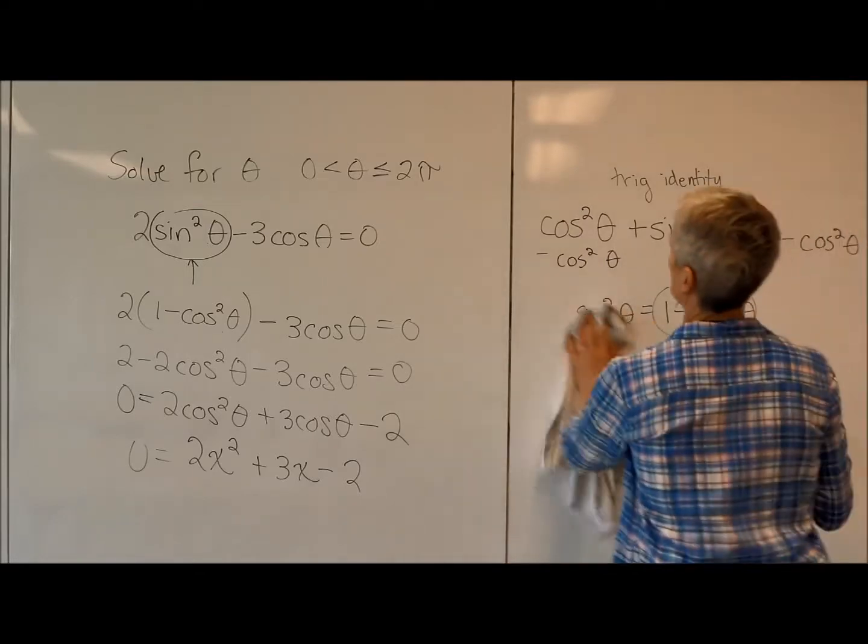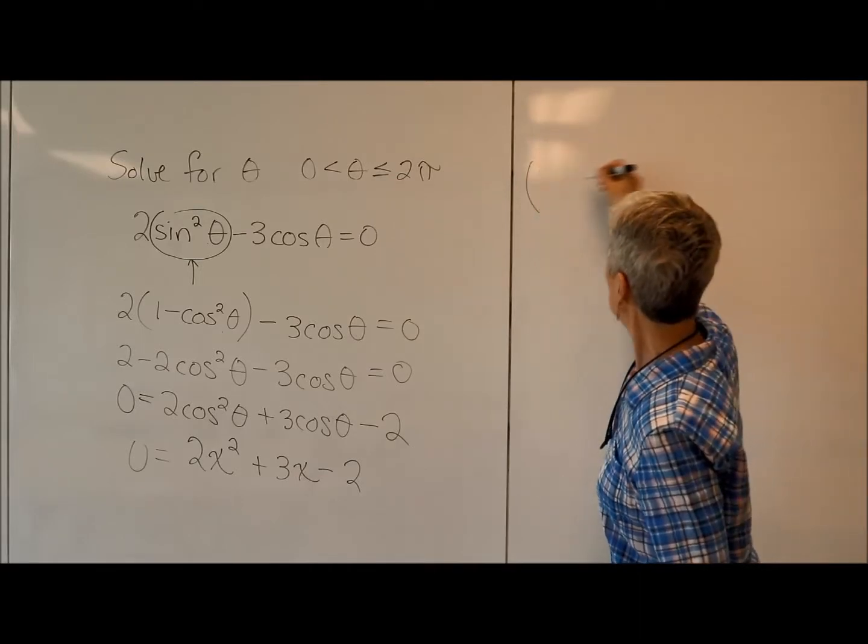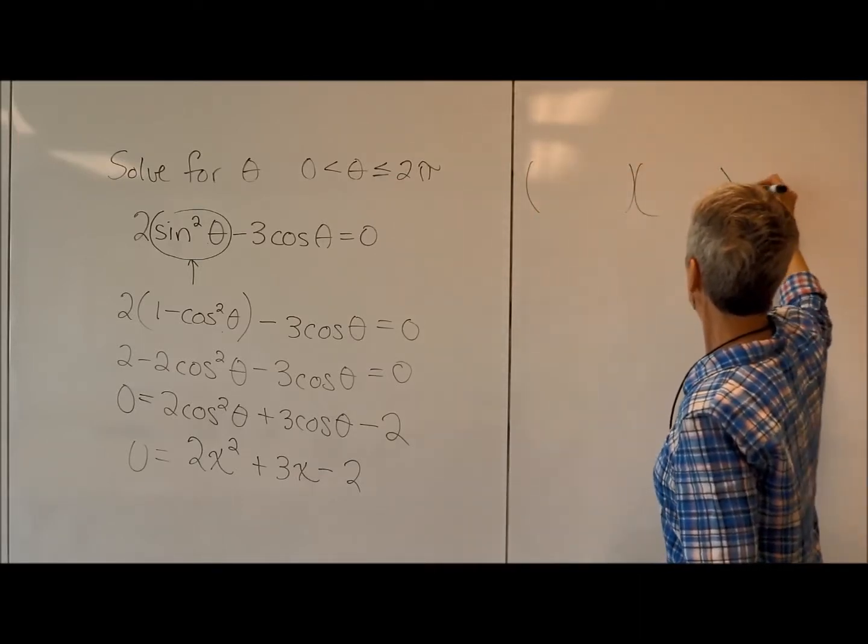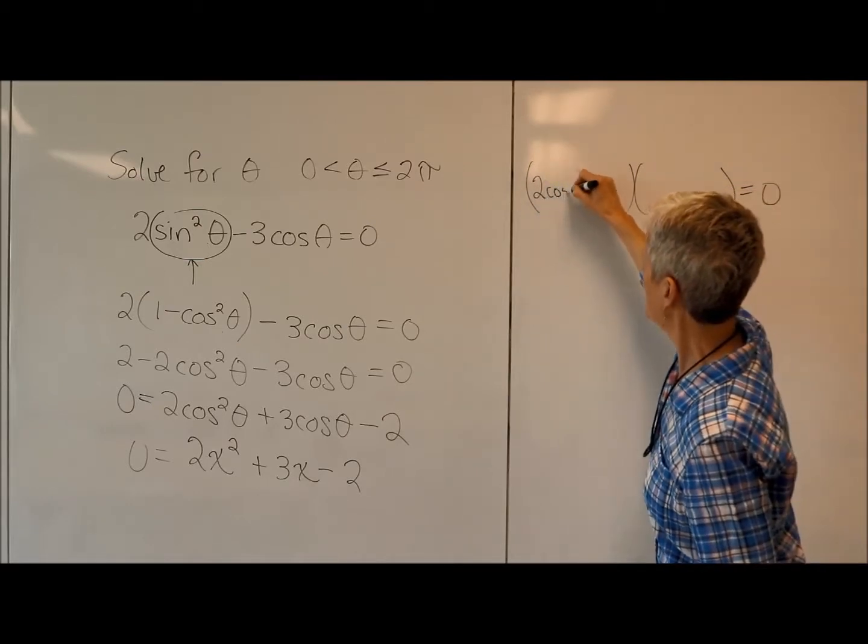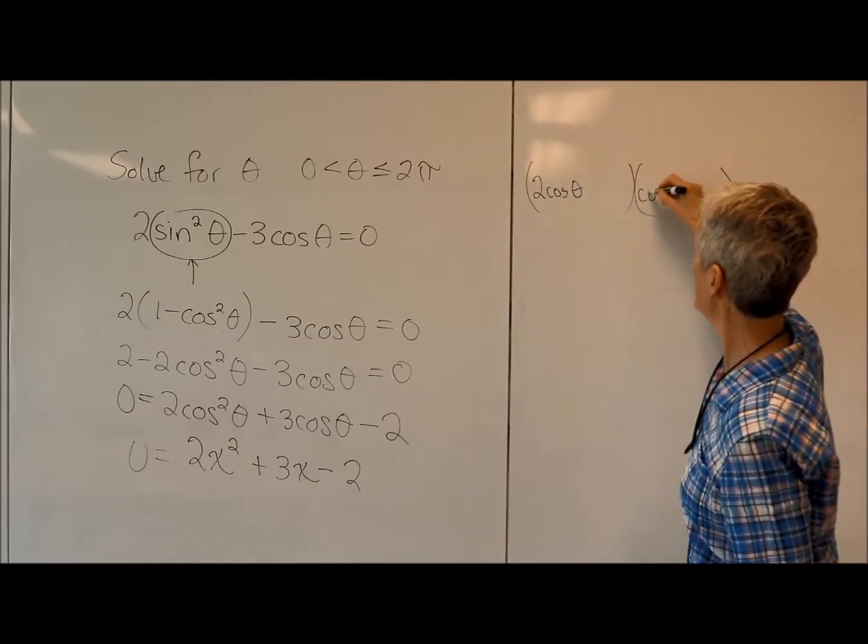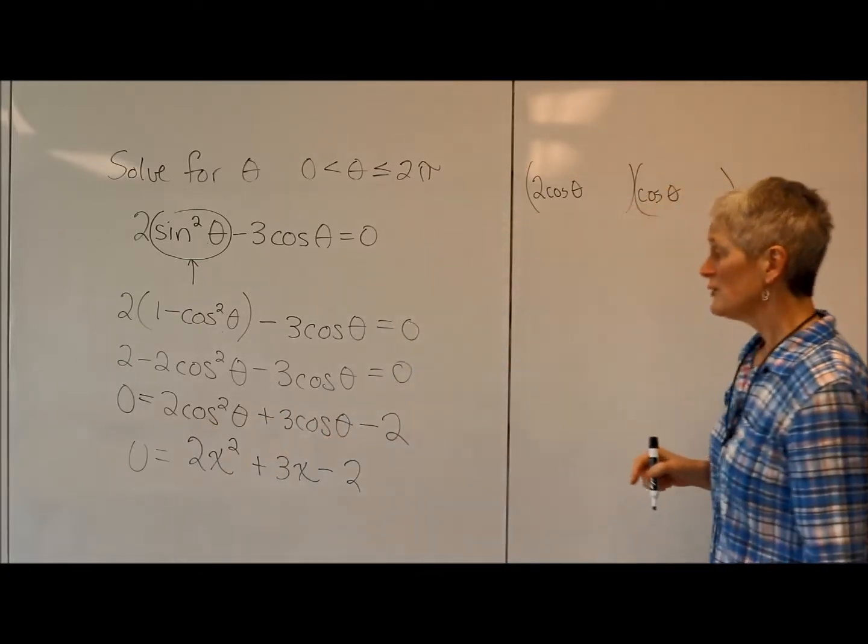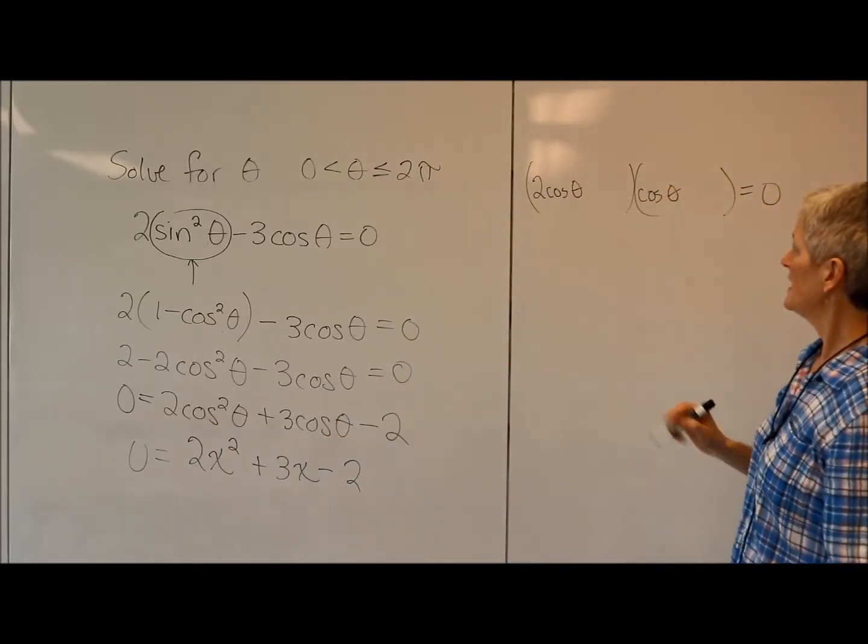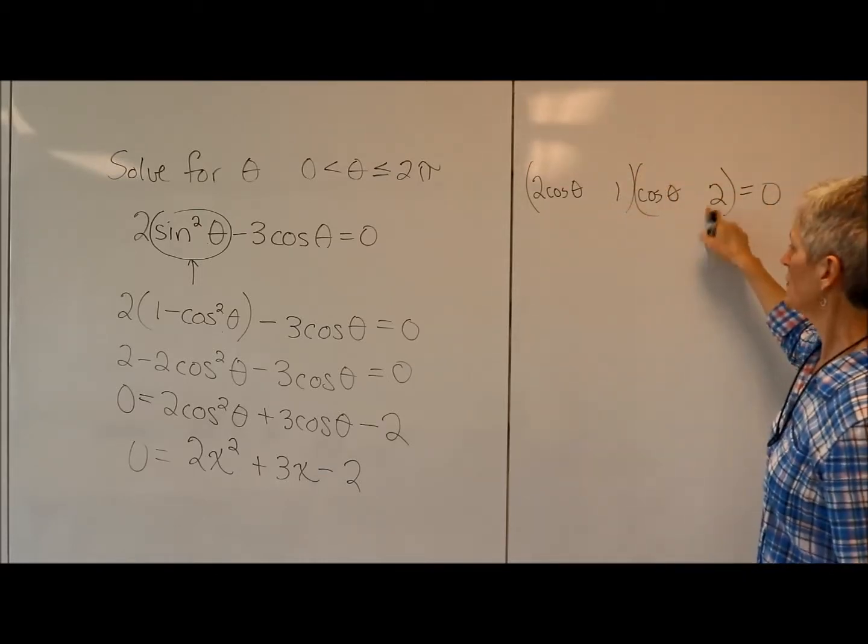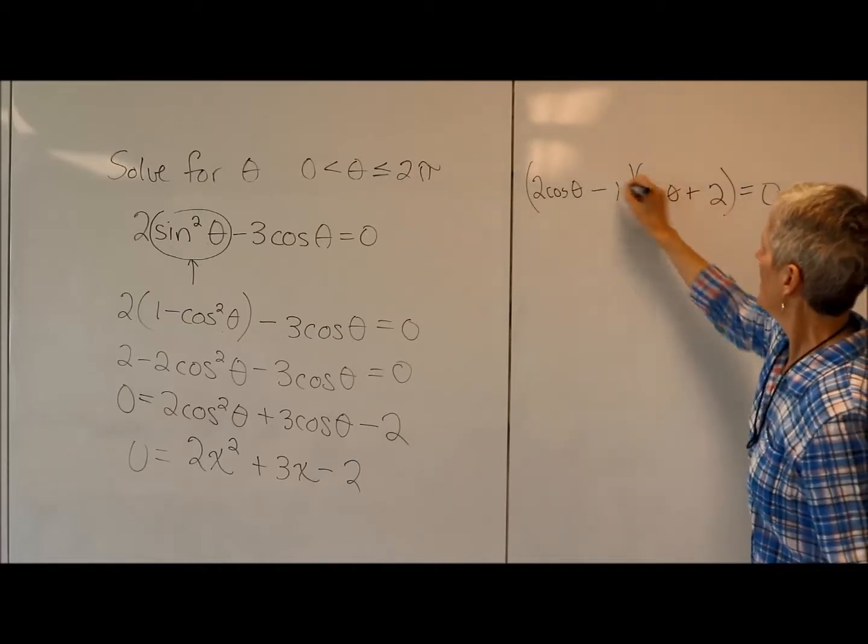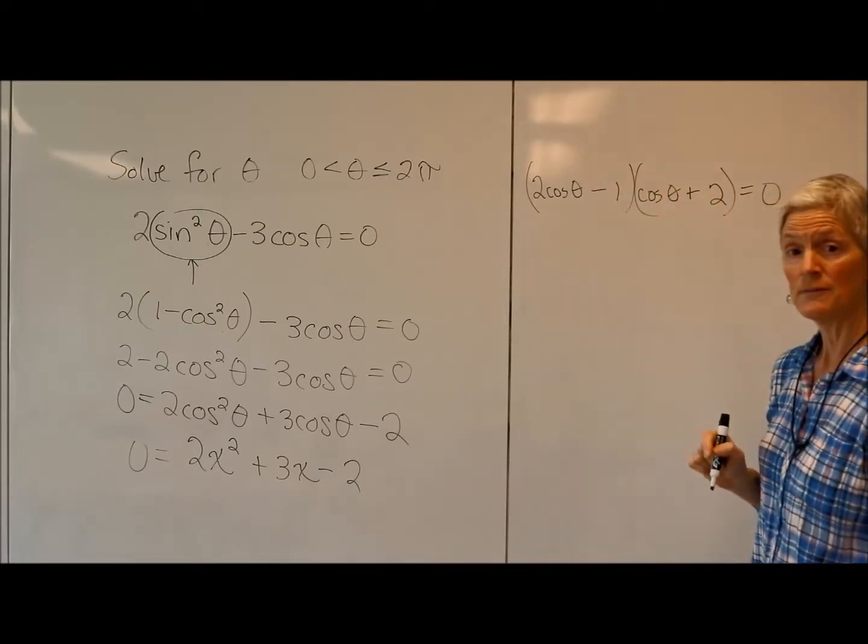So let me erase my trig identity here. And I'm just going to dive in and factor the trig version rather than the x version. 2 cosine theta times cosine theta. That's going to give me my first term. 2 times 1, one of them negative, will work for my second. I'm thinking that that will give me a 4 cosine theta. This will give me a minus 1 cosine theta. That works.